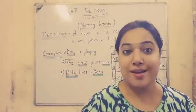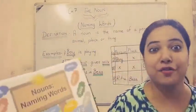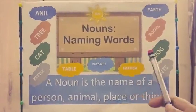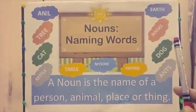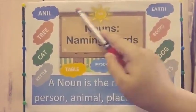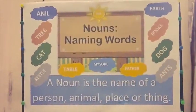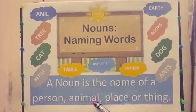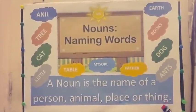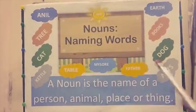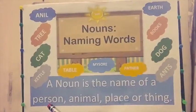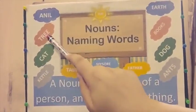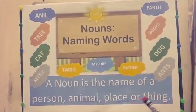Without a name, we can't call a person or a thing. Now let's see through some colorful pictures. A noun is the name of a person, animal, place or thing. Anil — Anil is the name of a person. Tree — tree is the name of a thing.